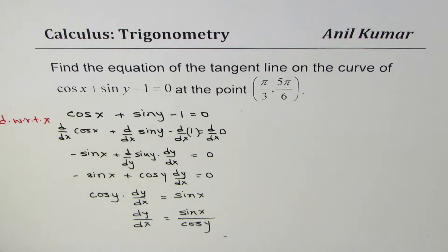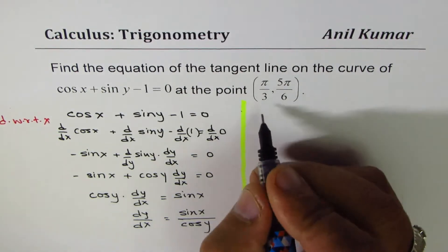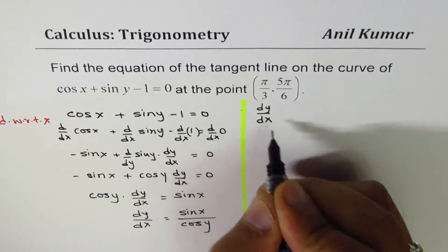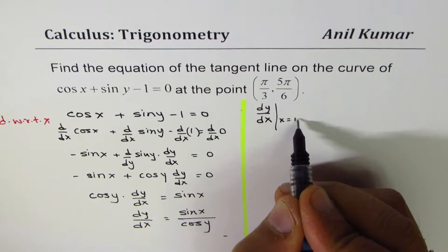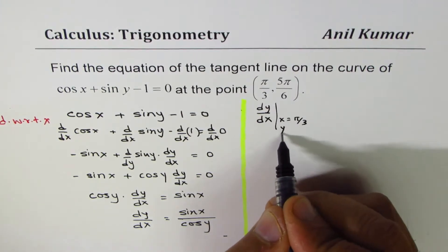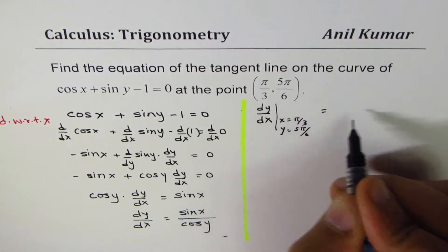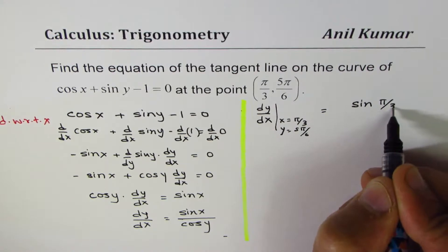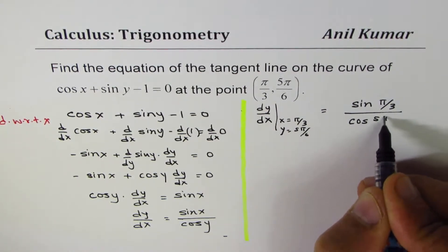Since we are given the point, we can always find the values and then the slope. Let's substitute. We have dy/dx at the given point where x is π/3 and y is 5π/6. So substitute these values: that should be equal to sin(π/3) over cos(5π/6).